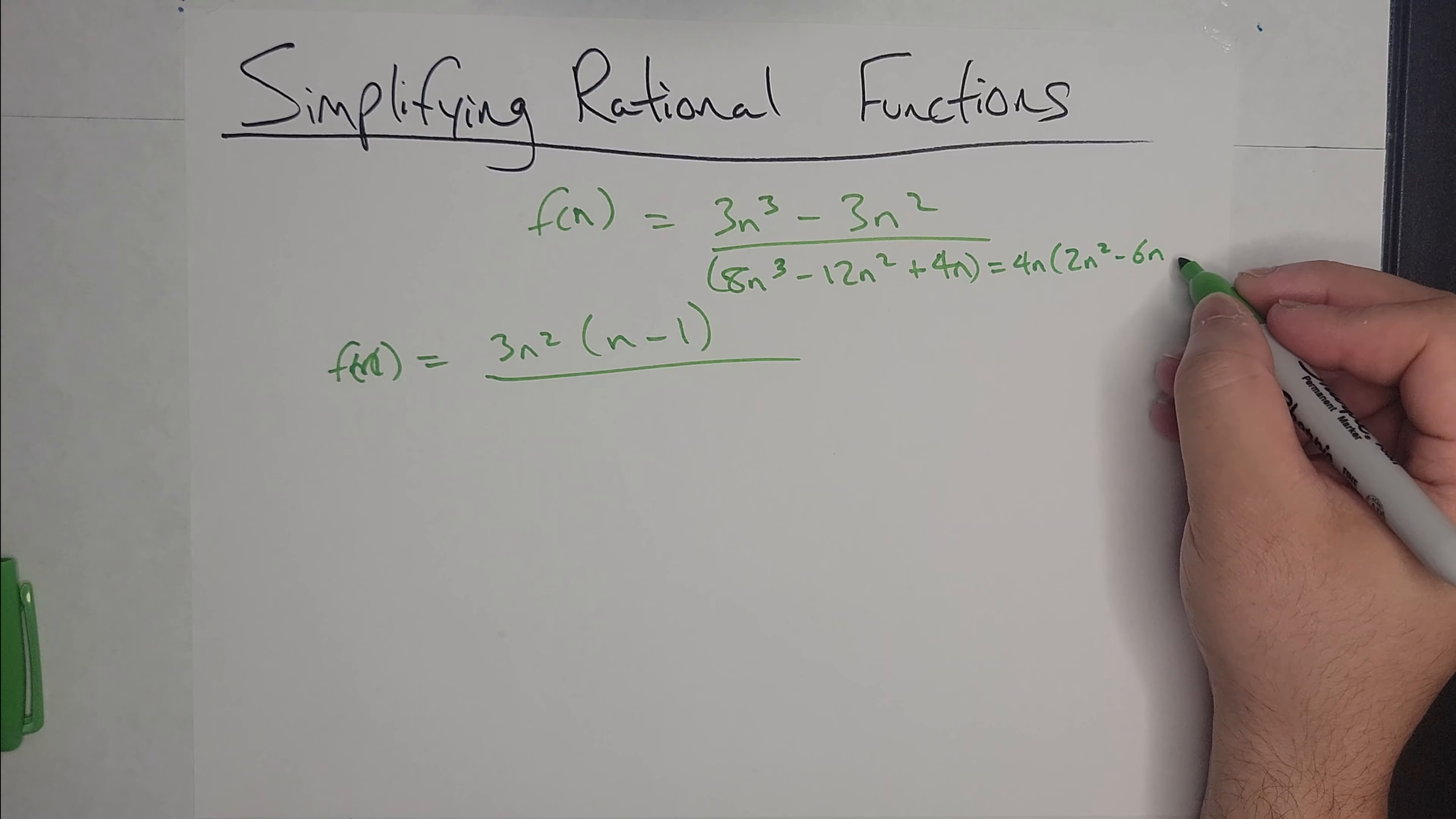Factoring out an n, so I'm left with 2n - 1, and then from here I can factor out a negative 1, and I'm left with 2n - 1. n - 1, that's where you get here.